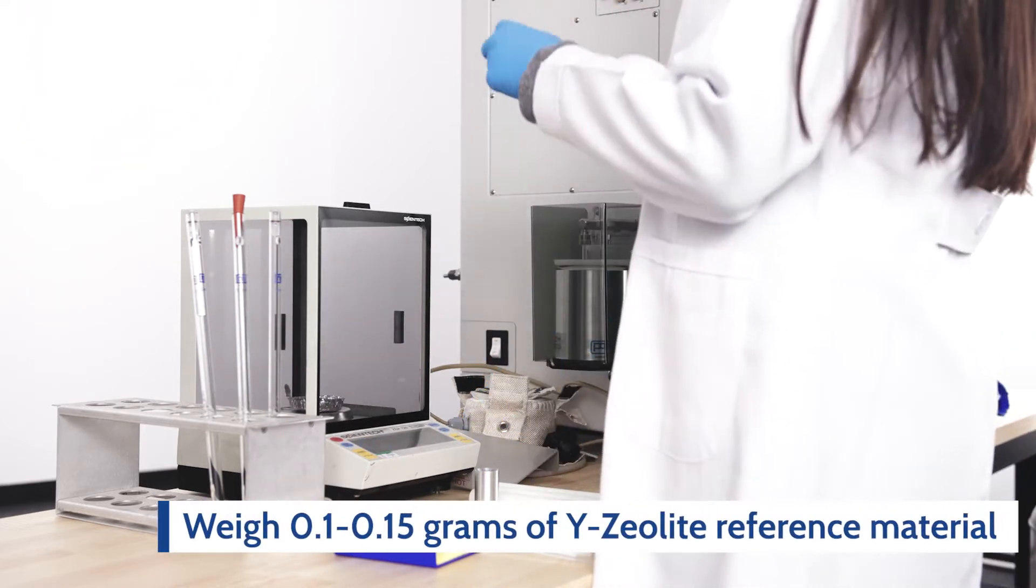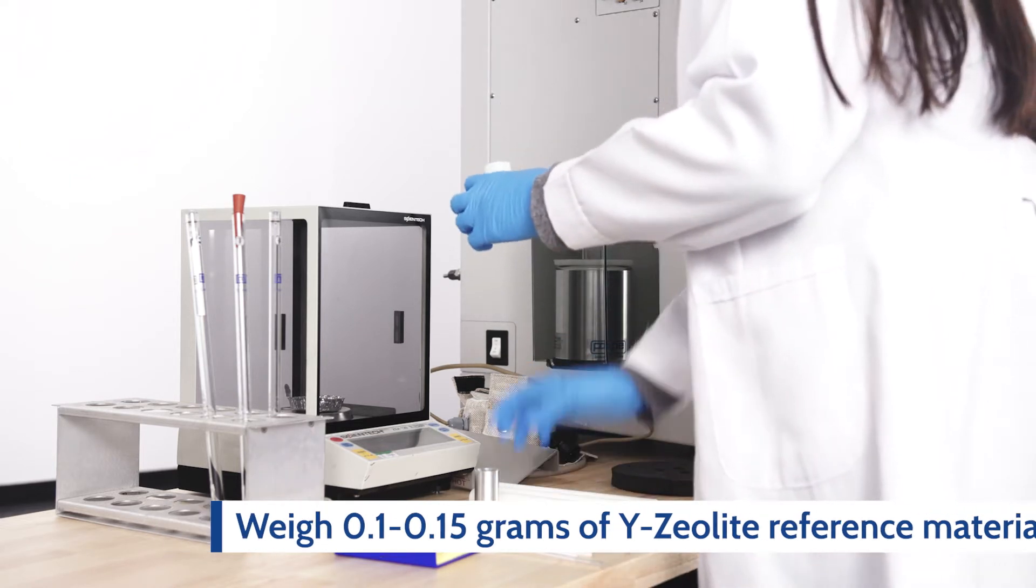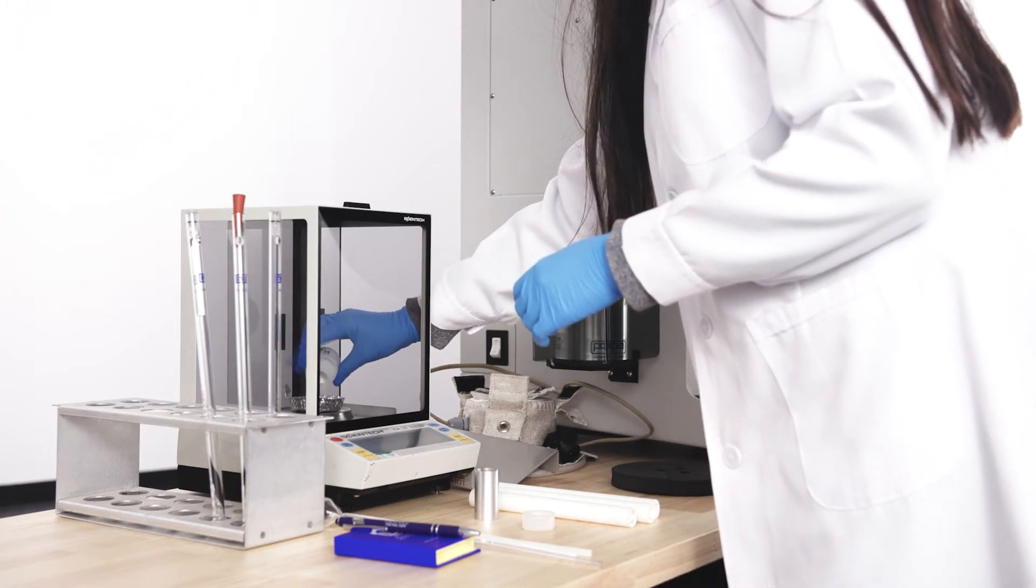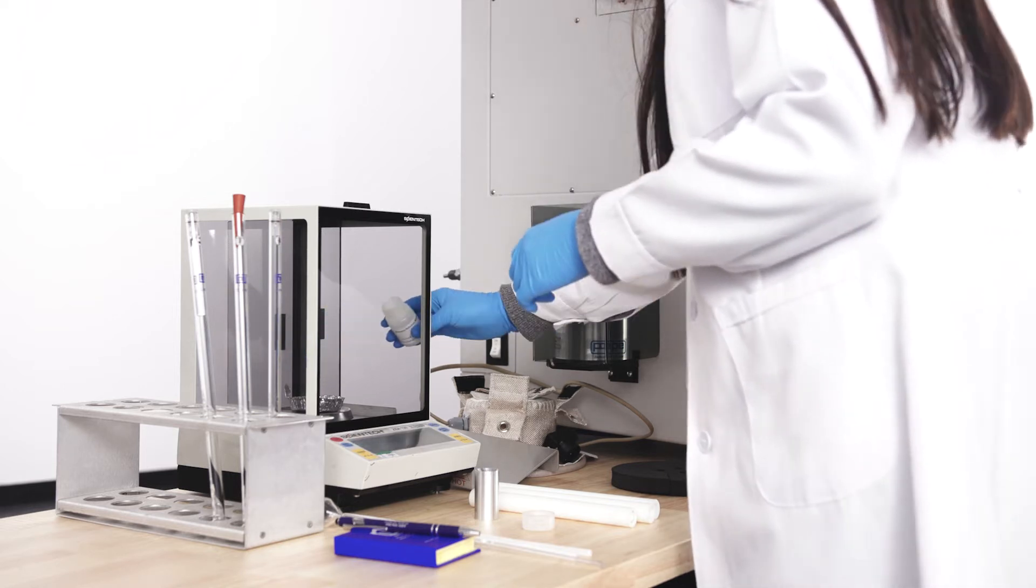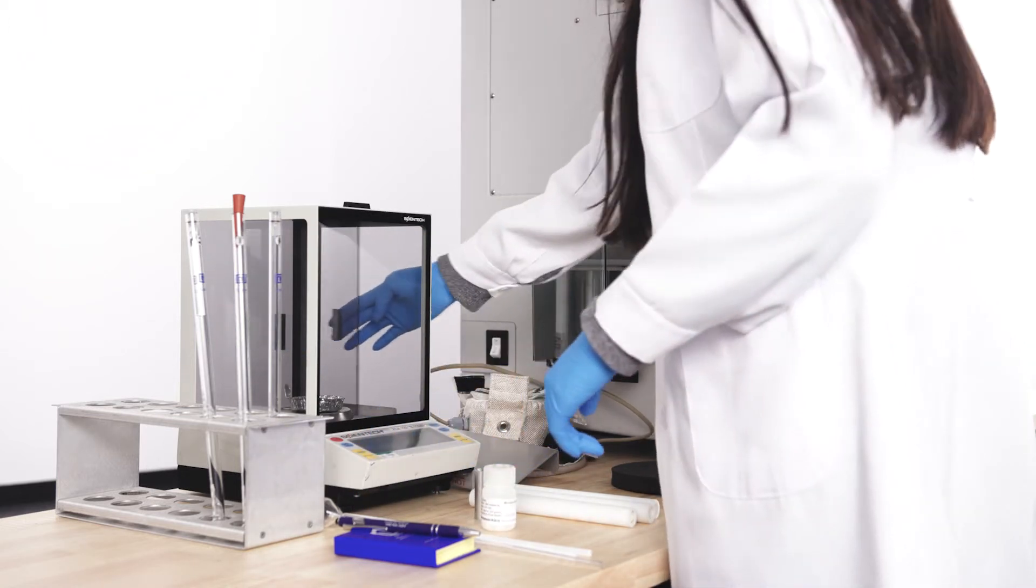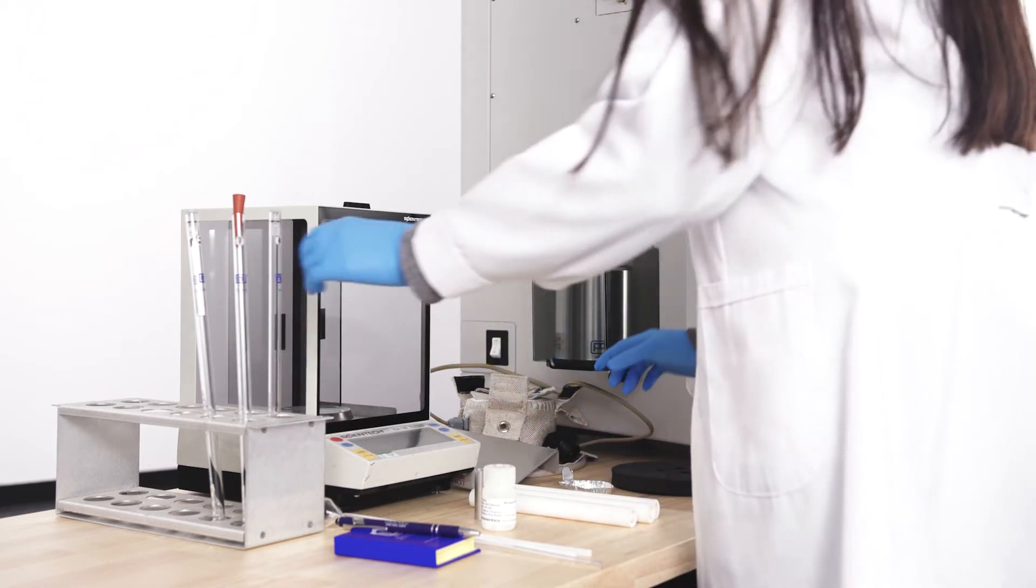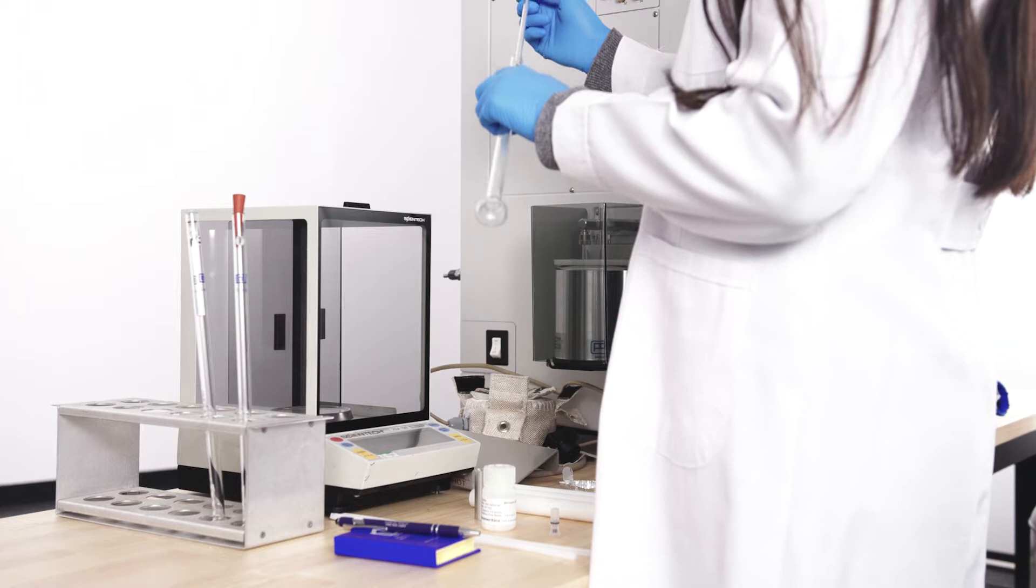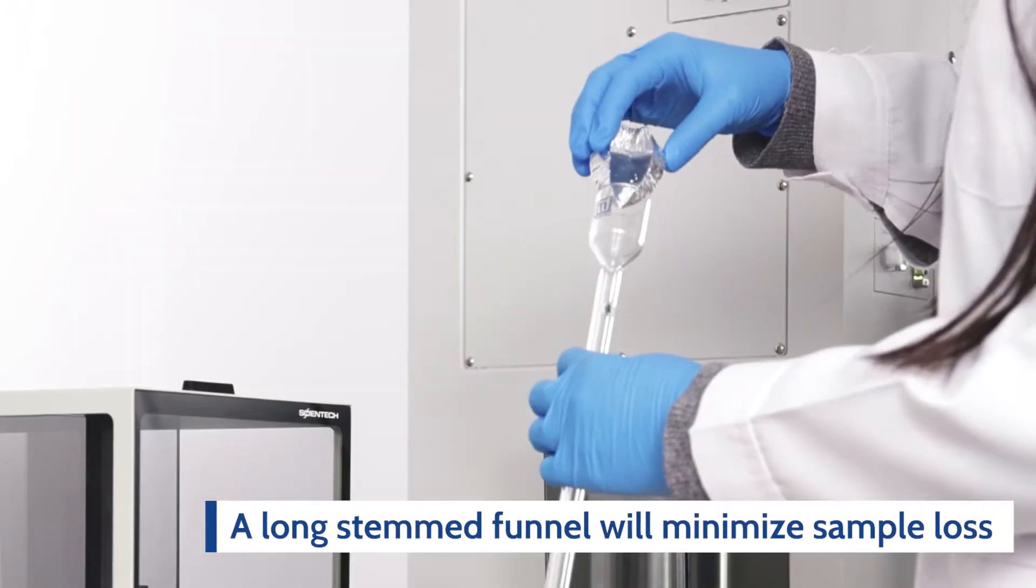Weigh about 0.1 grams to 0.15 grams of Y-Zeolite reference material and transfer the sample to the tube using a funnel. We recommend using a long stem funnel to help minimize sample loss.